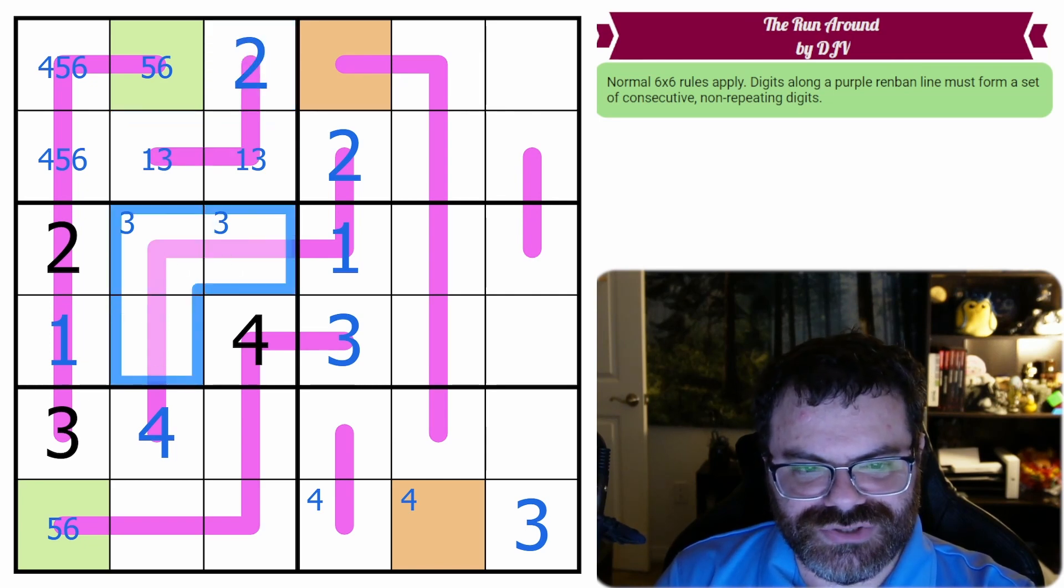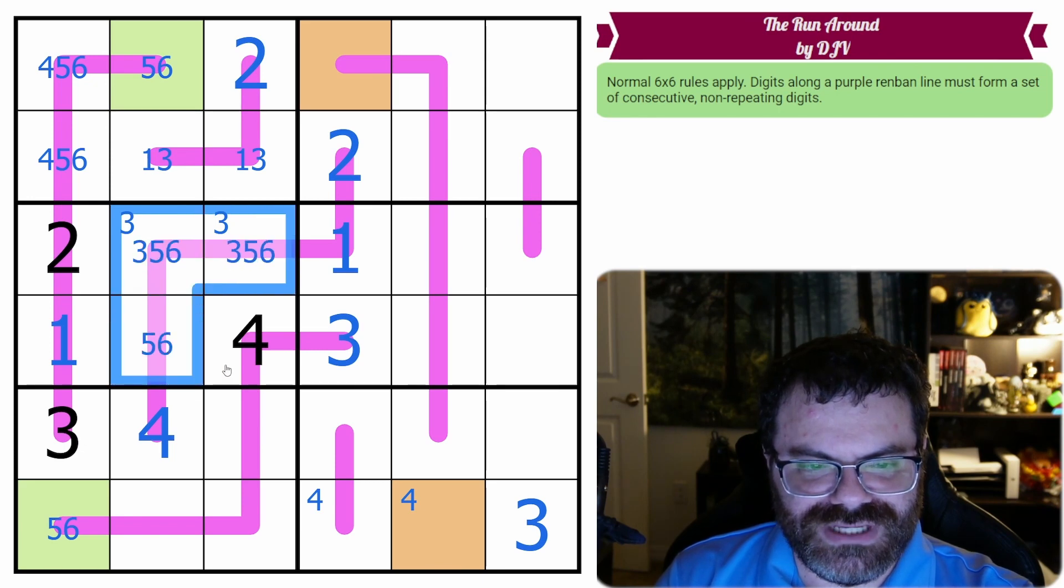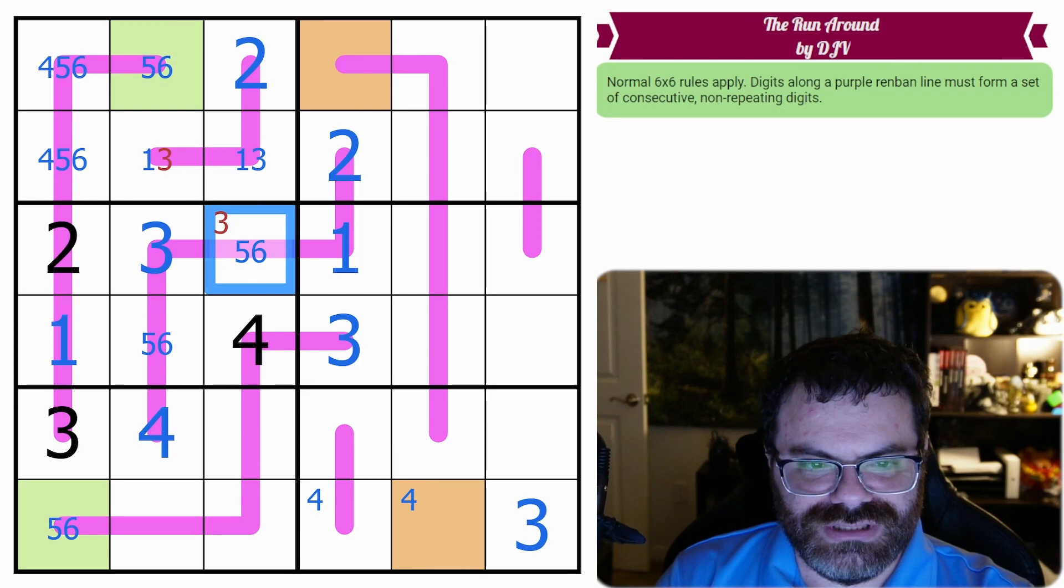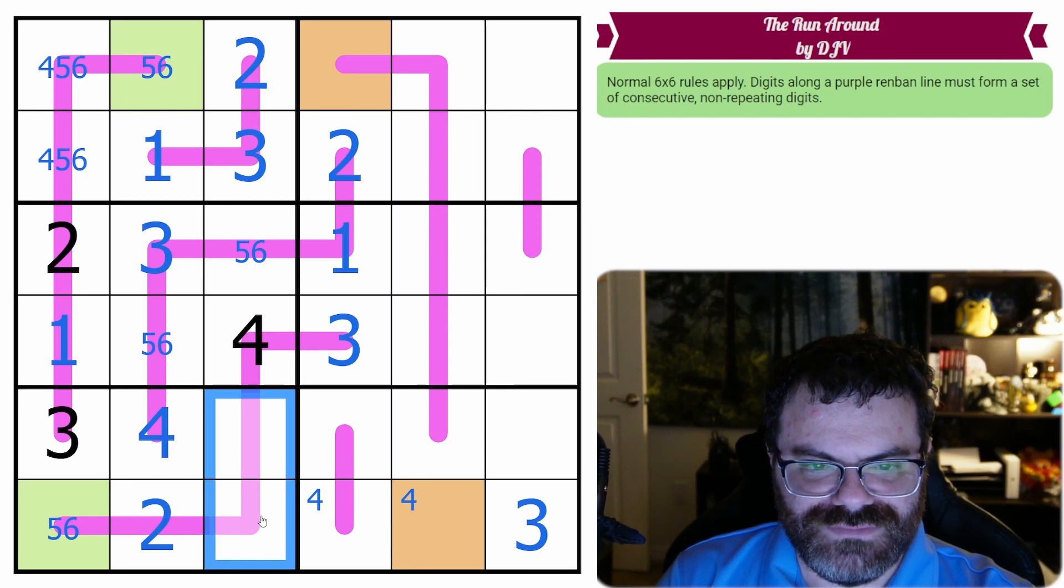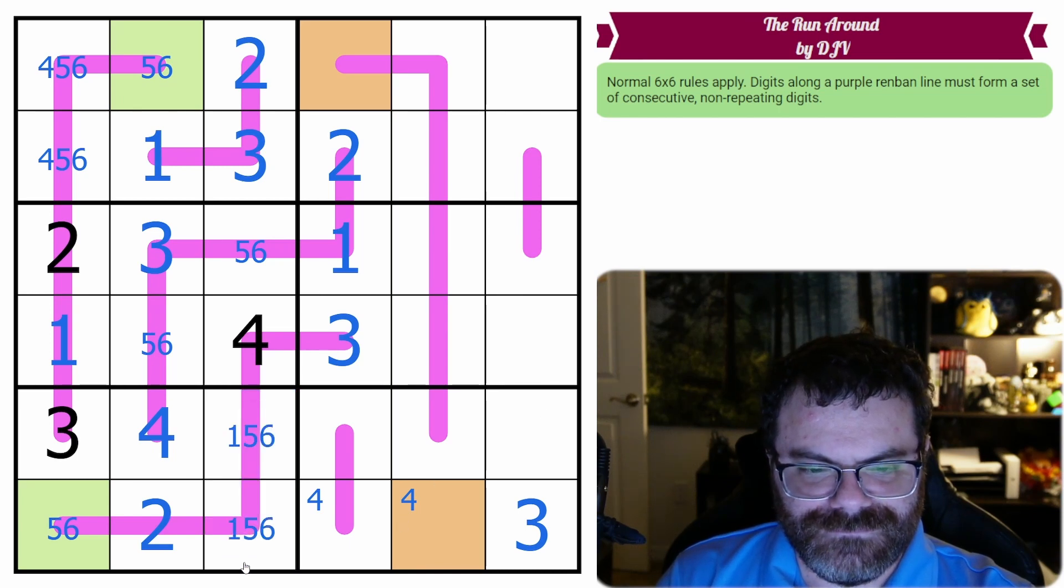So this is a triple. The 3 is here. We need 5 and 6. That's a 5, 6 pair. So that has to be 3. That places this 1 and 3. This is a 2 for the column. We need 1, 5, 6 here. That's working out.